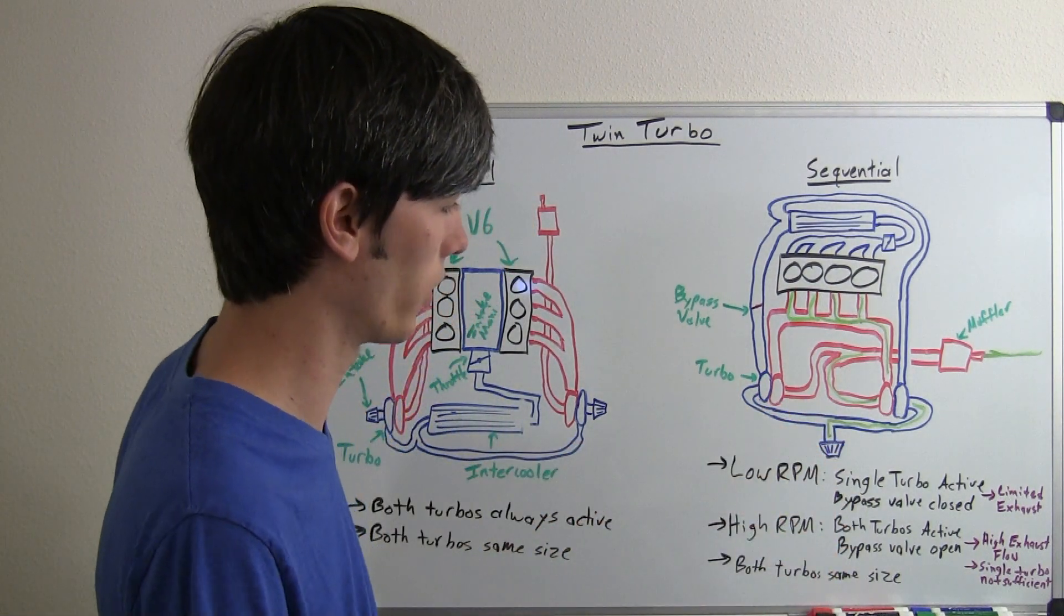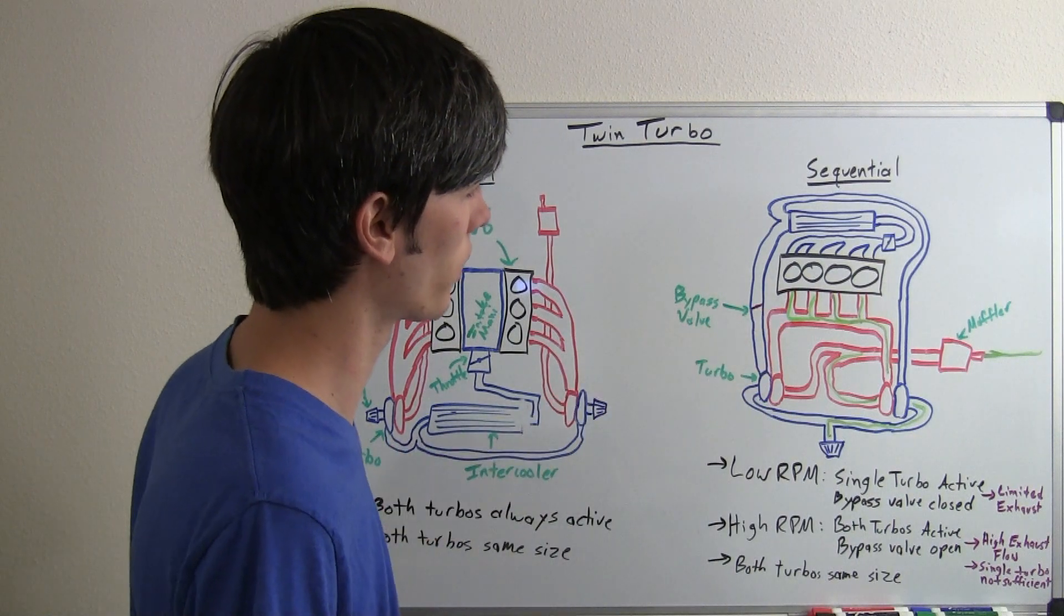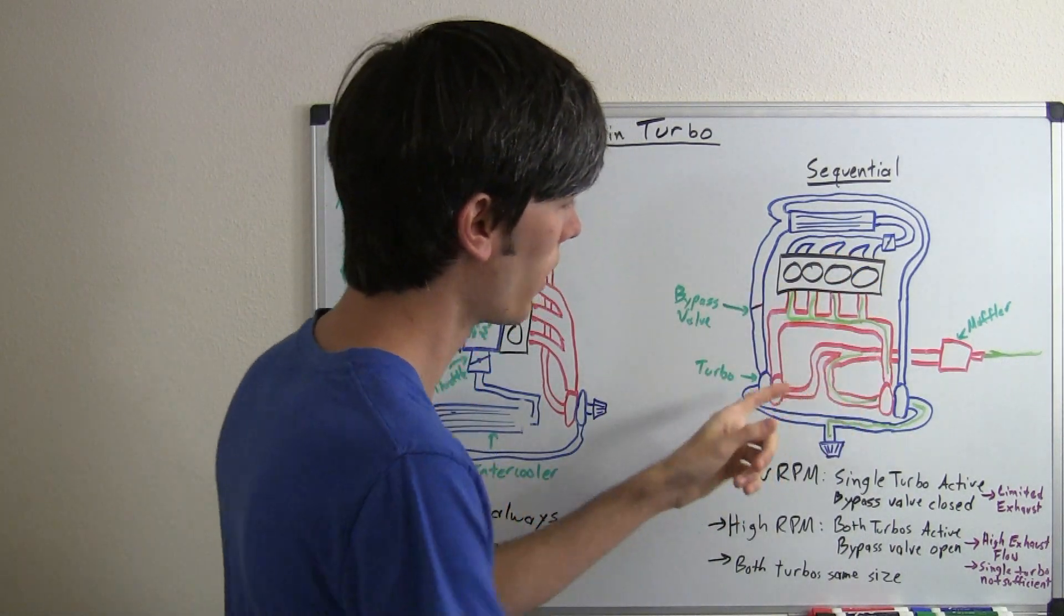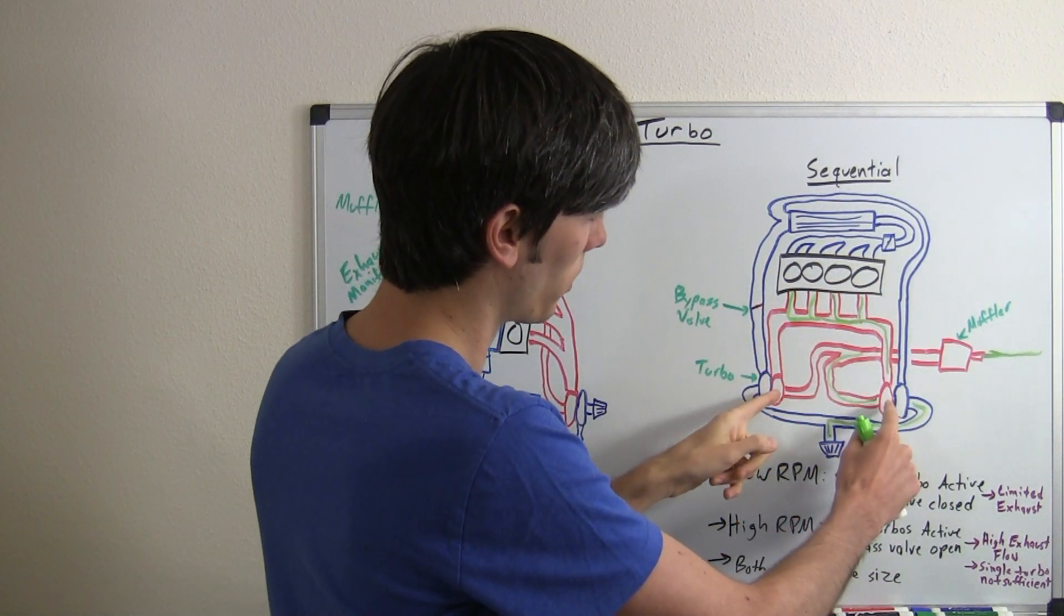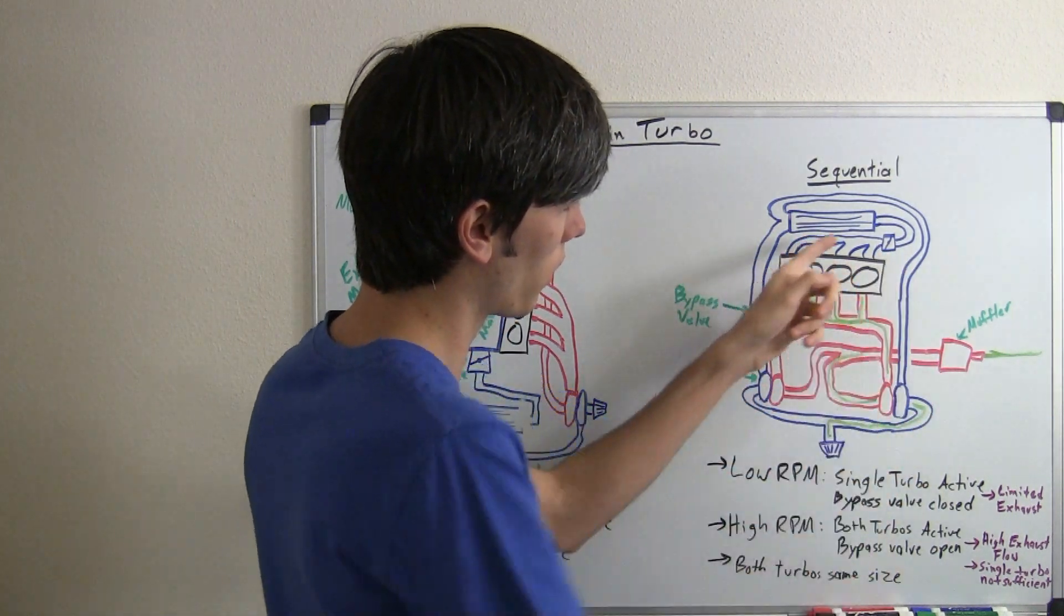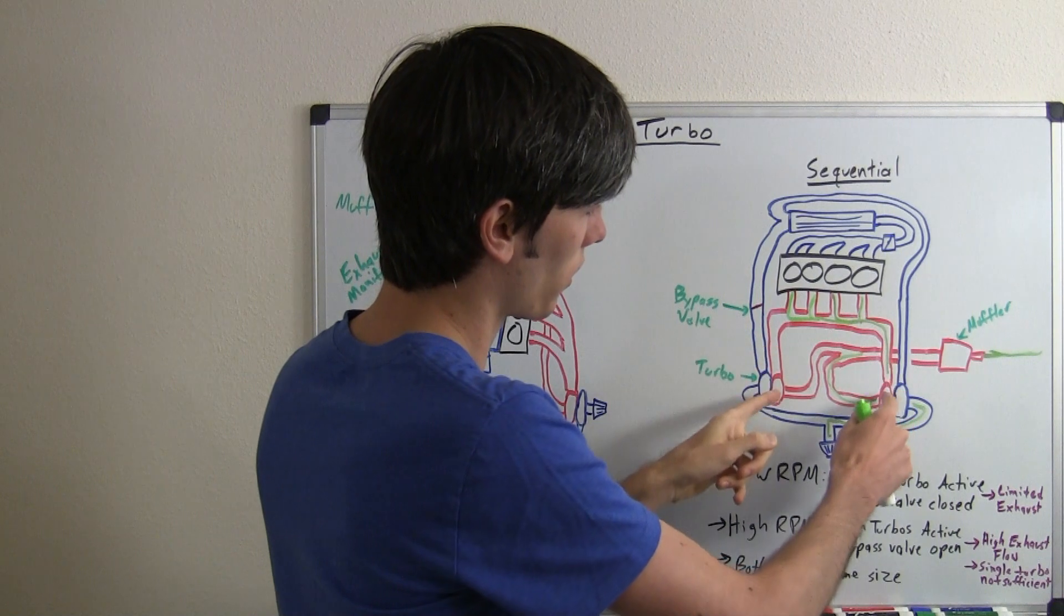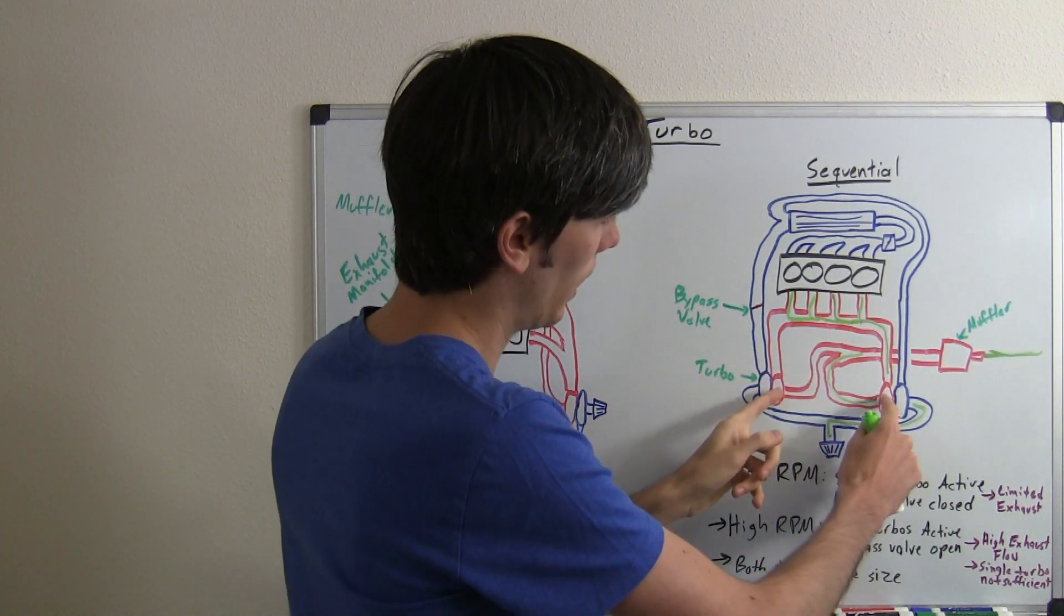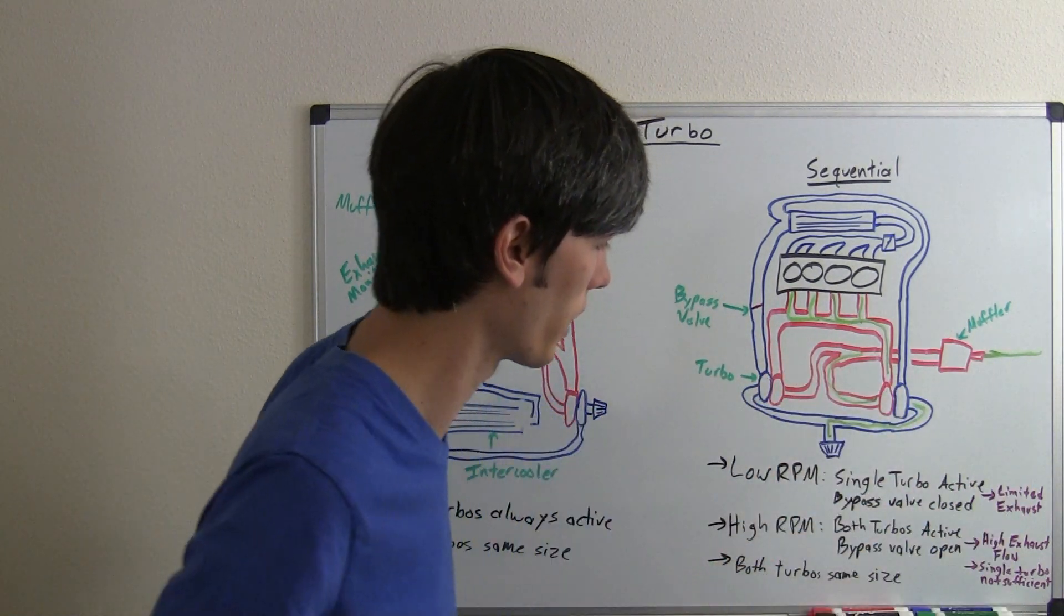Now, at higher RPM scenarios, this bypass valve is going to open up. You're going to have a lot more exhaust, and so all of that exhaust is going to be directed to both of these turbos. So, they'll both be pulling in air, bring it to the intercooler, through the engine, and then they'll continue spooling up both of these turbos, and then finally out the exhaust.